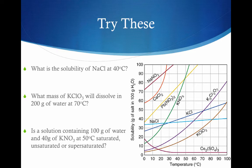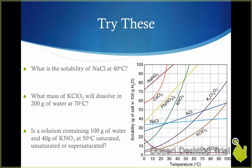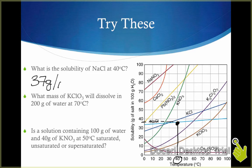We can also use these solubility curves to answer quantitative questions about solutions. Let's look at the first one together. The first question asks: what is the solubility of NaCl at 40 degrees Celsius? To answer this, I find 40 degrees on the temperature scale and follow that line up until I hit the line for NaCl. That point indicates the most NaCl that can be dissolved — the amount required to make a saturated solution. Following across, I can dissolve approximately 37 grams of NaCl per 100 grams of water. If I double the amount of water, I can dissolve double that amount; if I halve the water, I can dissolve half.